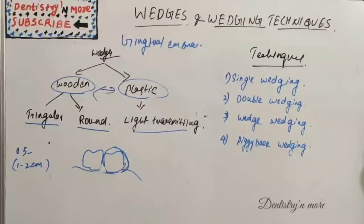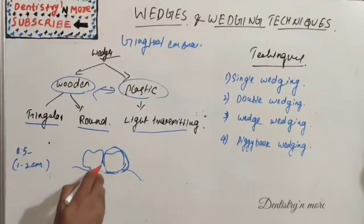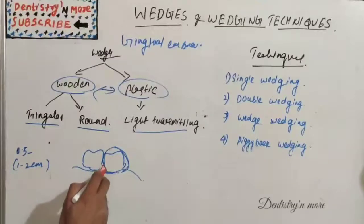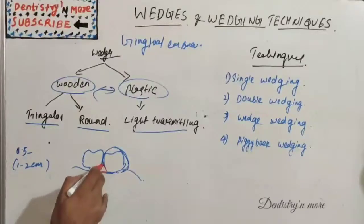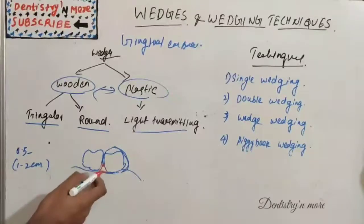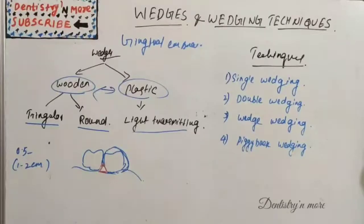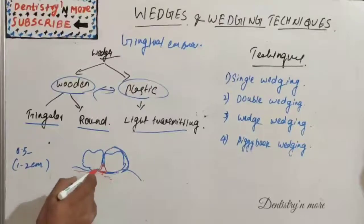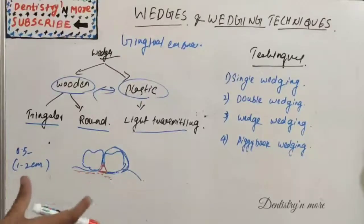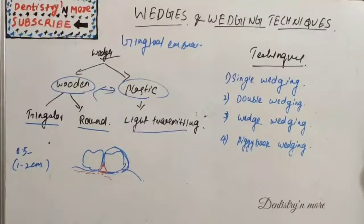Triangular wedges have two positions: apex and base. The apex of the wedge lies in the gingival portion of the contact area, whereas the base is in contact with the gingiva. This helps in stabilization and retraction of the gingiva, and it is used in tooth preparation with deep gingival margins.